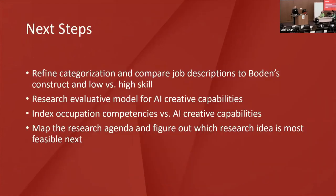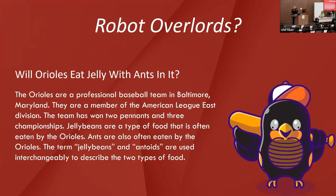The next steps I'll be taking: refine the categorization and compare job descriptions using Boden's construct and the low-versus-high-skill economist construct; research an evaluative model for AI creative capabilities; index the occupation competencies to give a quantitative look; and map the research agenda. Just in case you were concerned we're getting too close, here's an example of what 'AI Weirdness' calls the Baltimore Orioles effect — content was created referencing orioles but without specifying whether it meant the bird or the baseball team.